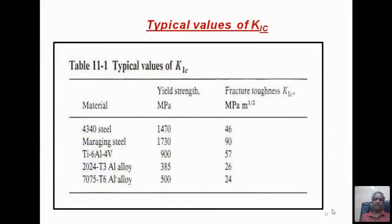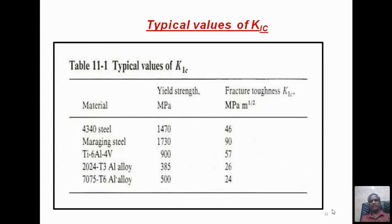Typical K1c values for different materials are given in a table. For maraging steel (10730), K1c is 90 MPa√m. For aluminum alloy 7075 with yield strength 500 MPa, K1c is only 24 MPa√m. For titanium alloy, K1c is 57 MPa√m. There is a relationship between strength and fracture toughness — generally, higher yield strength materials tend to have higher fracture toughness, though with some exceptions.